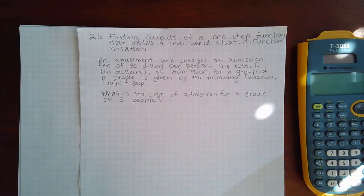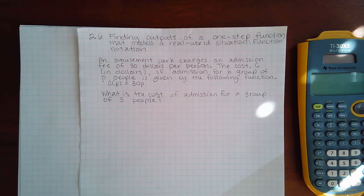Here we are: 2.6, finding outputs of a one-step function that models a real-world situation using function notation. An amusement park charges an admission fee of $30 per person. The cost C in dollars of admission for a group of P people is given by the function C(P) = 30P.